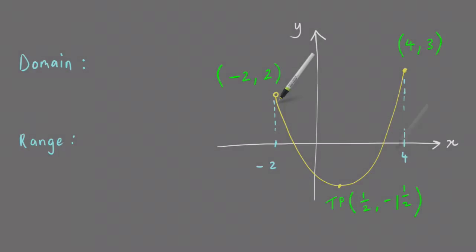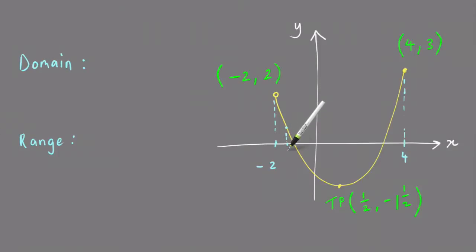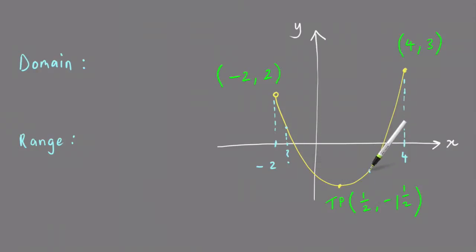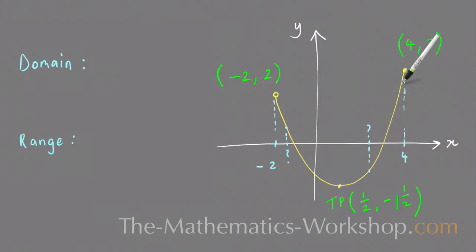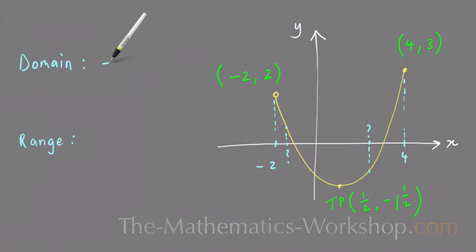Now if I pick any point on the graph and do a similar thing, the x value is somewhere between minus 2 and 4. It doesn't matter where I pick a point on the curve — that x value is going to be somewhere between minus 2 and 4. So anywhere I pick a point on that curve, the x value is going to be between minus 2 and 4.